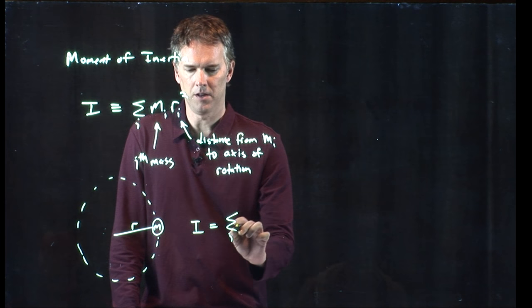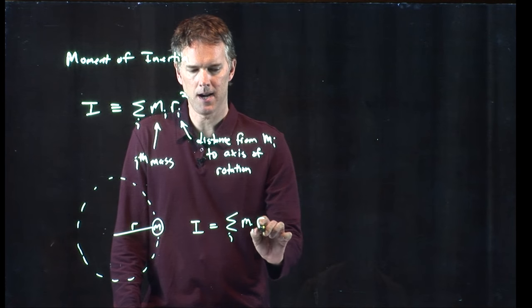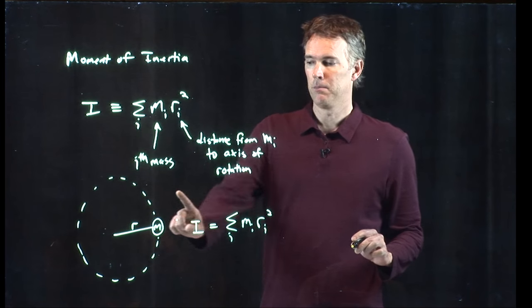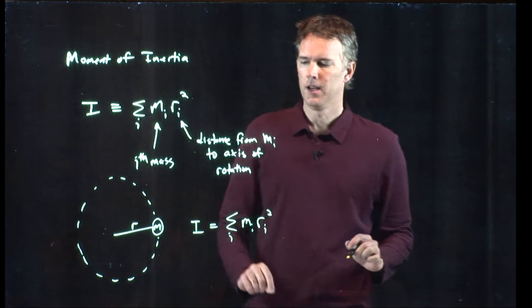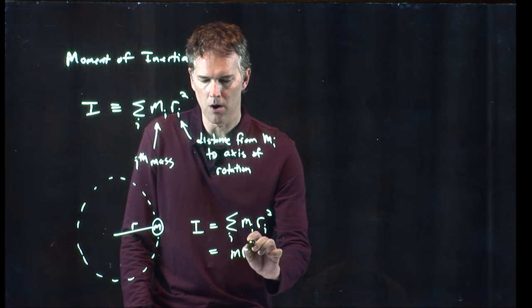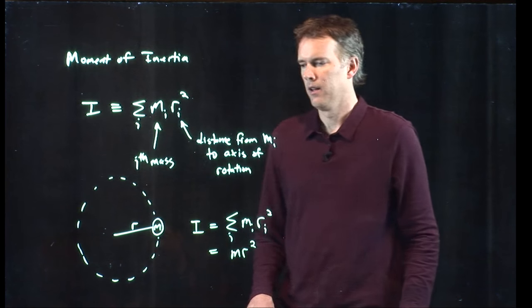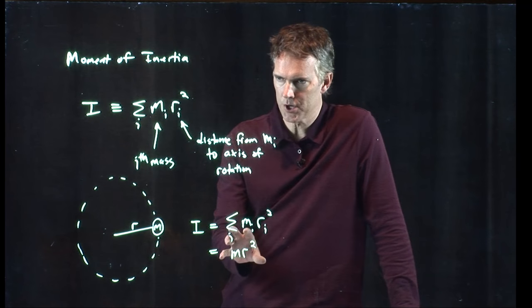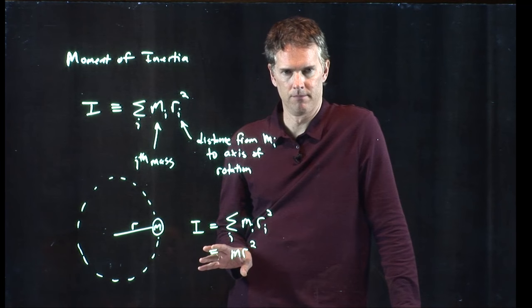Well, it's sum over i m sub i r sub i squared. Let's start. We only have one particle in this example, and so this just becomes sum of m r squared, and those are the variables that we used. We only have one term, that's it.